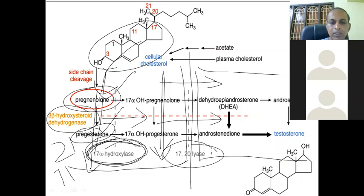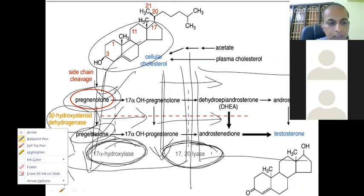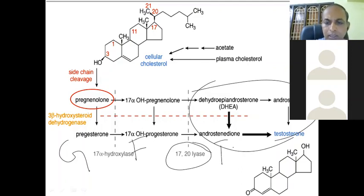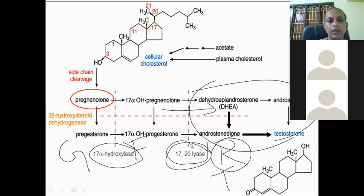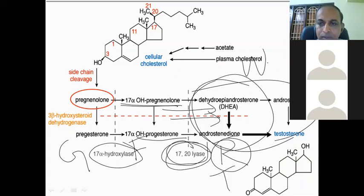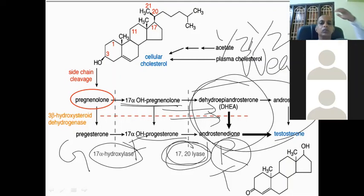The zona glomerulosa and zona fasciculata don't have 17,20-lyase, so androgens are not synthesized there. Because of the presence of 17,20-lyase in zona reticularis, 17-hydroxyprogesterone and pregnenolone are pushed towards the androgen pathway, producing weak androgens: dehydroepiandrosterone (DHEA) and androstenedione, with activity at 1/20th to 1/30th range.